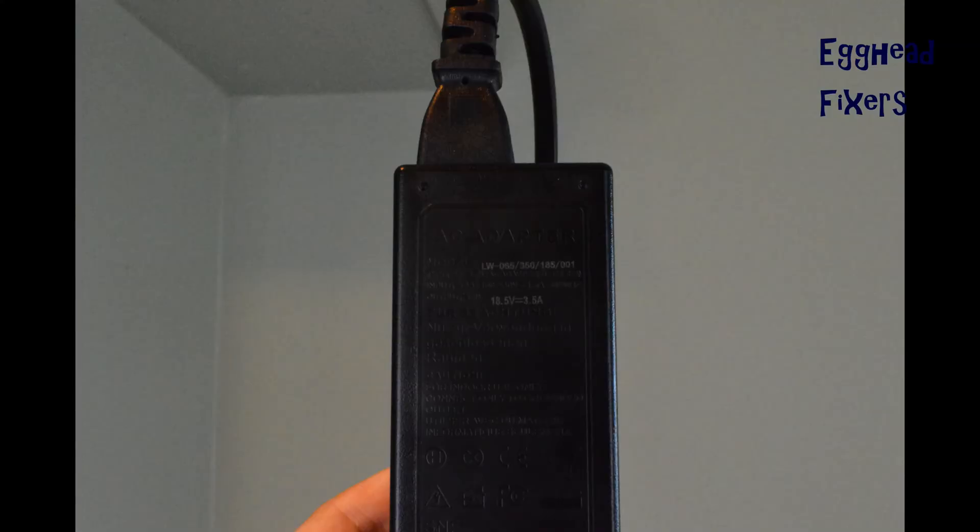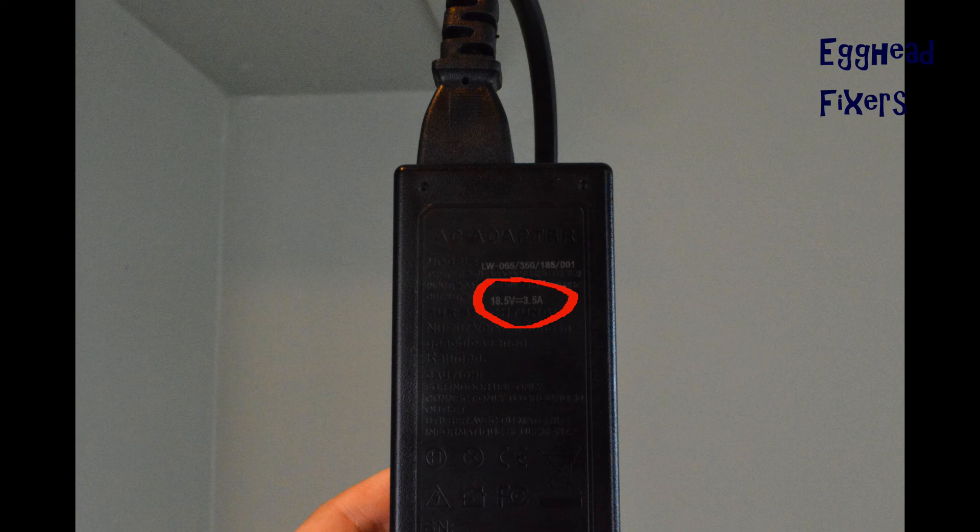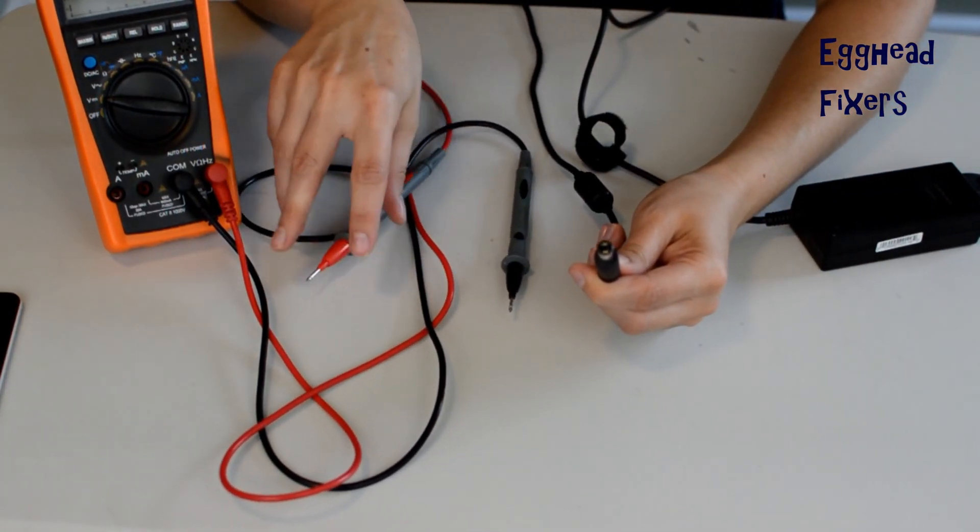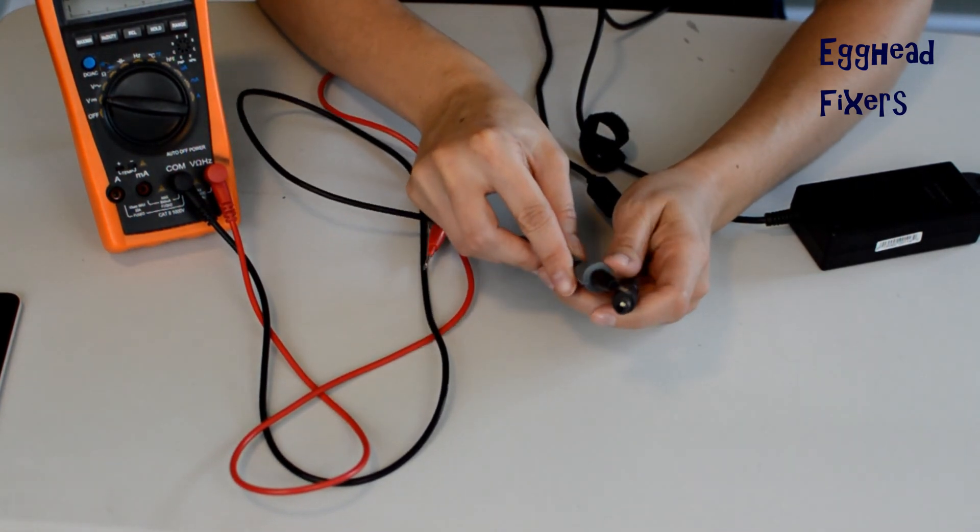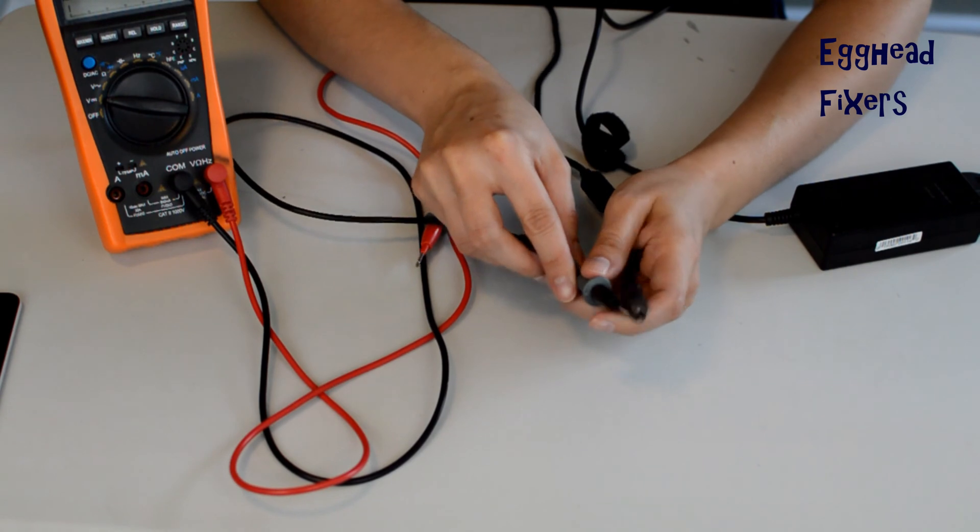For example, this reads 18.5 volts, so it should be near that if it's a good charger. It should be either maybe half a volt higher or half a volt lower. That's well within the margin of error for a charger that's working properly, because if it's too high it won't work, if it's too low it won't work.